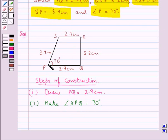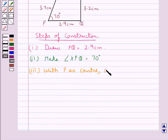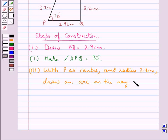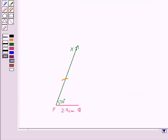Now SP is 3.4 cm. So in the next step we say that with P as the center and radius 3.4 cm, draw an arc on the ray PX to locate point S.